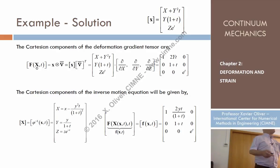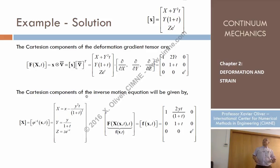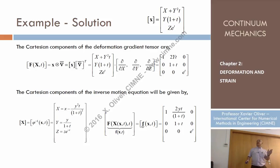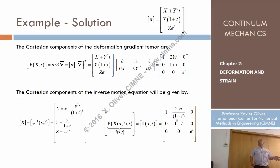Am I changing the physics of the entity? No — I'm just describing it mathematically in terms of different coordinates. So using the inverse equations of motion, I replace Y with the spatial equivalent (y divided by one plus T), and obtain the same tensor now described in terms of spatial coordinates. That's why, being strict with nomenclature, I use small f — it's the same Green deformation tensor but described in spatial rather than material coordinates. Note that specifically this component is different.